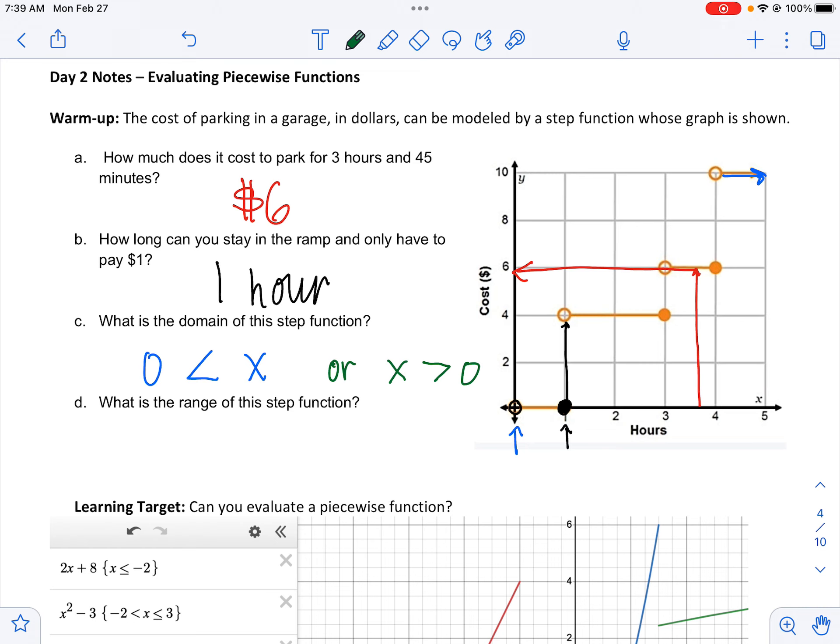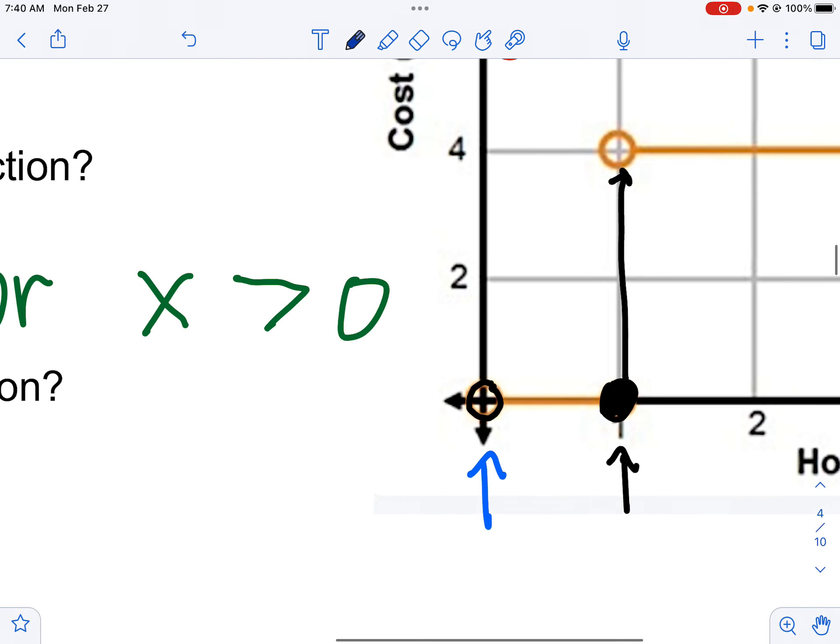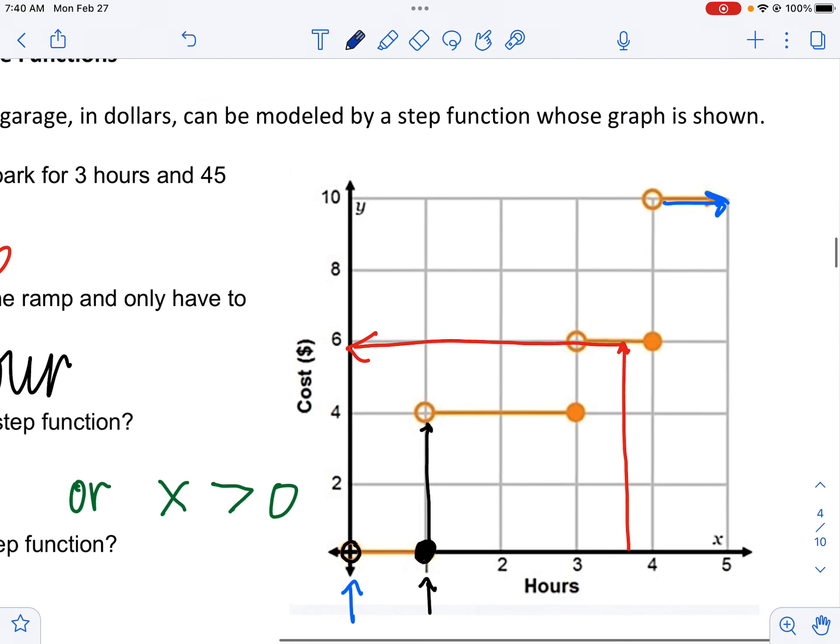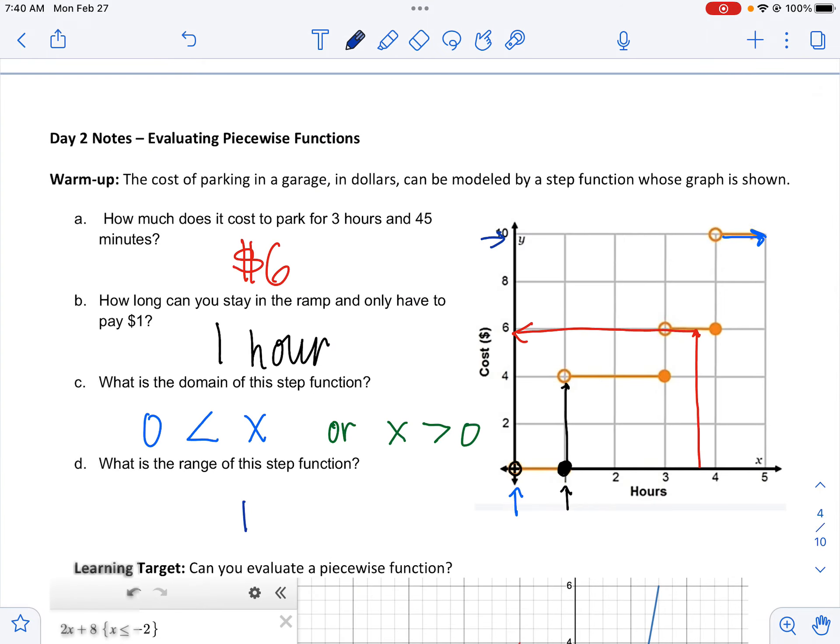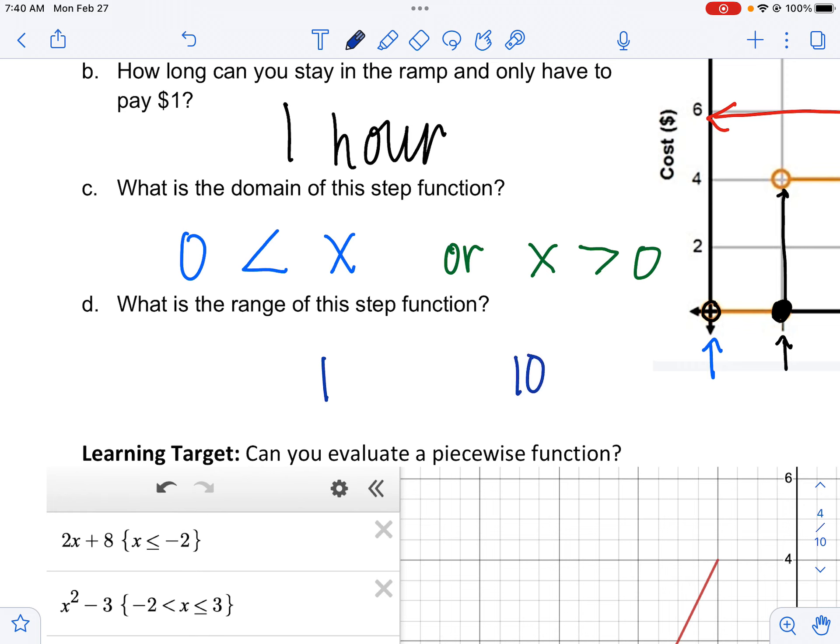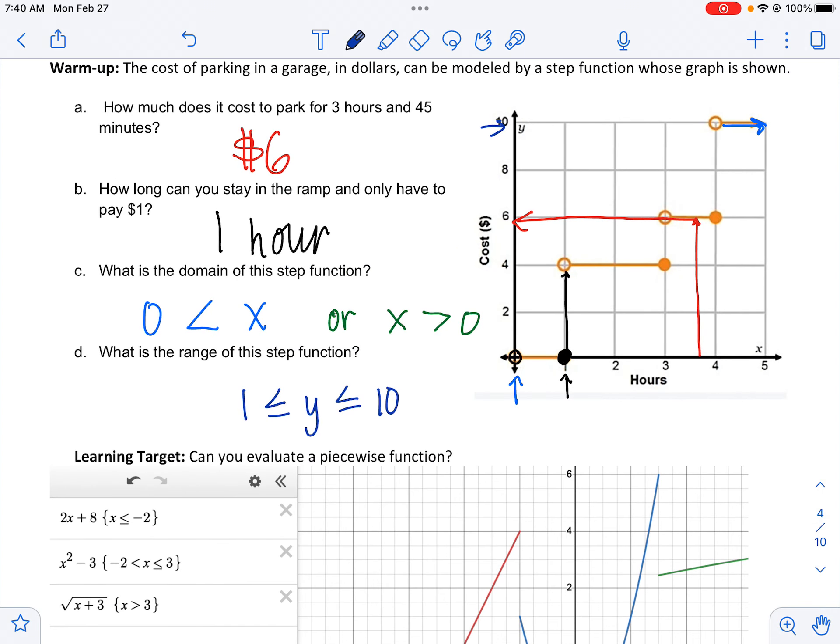The range is what are all possible y values. We can see that it starts at $1 and it goes up to $10 and that's where it stops. And it can include $10. And range is the y value. So we say y is between $1 and $10. Just a quick review: domain is all possible x values and range is all possible y values.